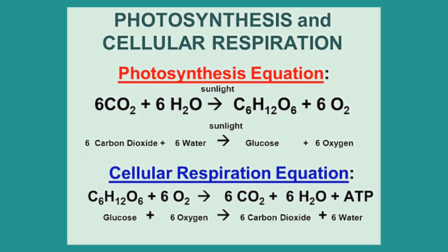The main difference between photosynthesis and cellular respiration is that photosynthesis is an anabolic process, where the synthesis of organic compounds occurs, storing energy, whereas cellular respiration is a catabolic process, where the stored organic compounds are utilized, producing energy. As shown in the chemical equation, the reactants of photosynthesis are the byproducts of cellular respiration, while the byproducts of photosynthesis are the reactants of cellular respiration.